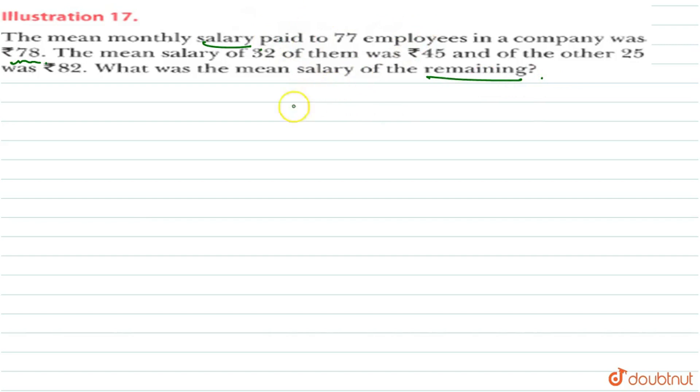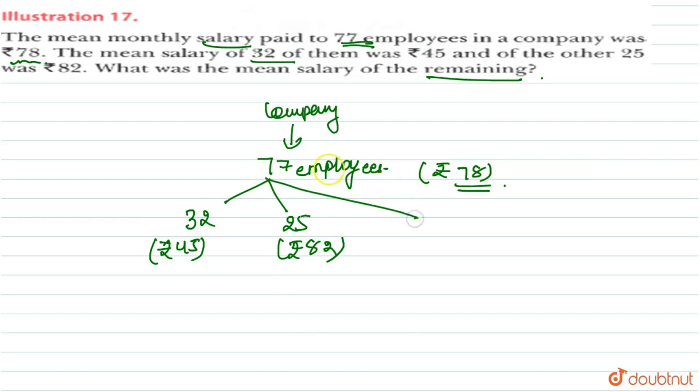We will read this question. How many employees have a company? 77 employees. And the mean salary of their salary is Rs.78. What is our 77 employees' average salary? The mean salary of 32 employees is Rs.45. And the mean salary of 25 employees is Rs.82. If we have 32 and 25 employees, total employees is 77.